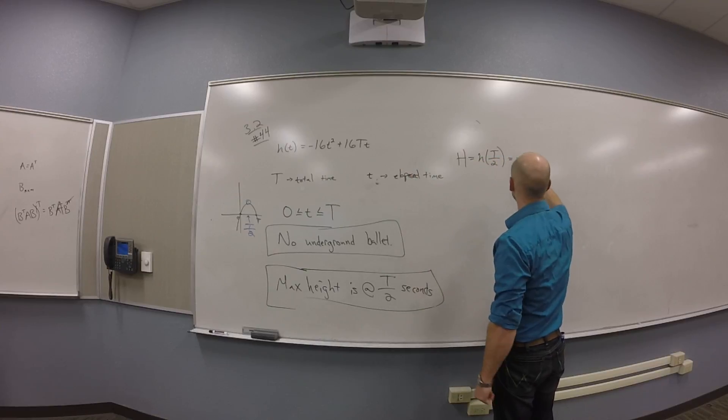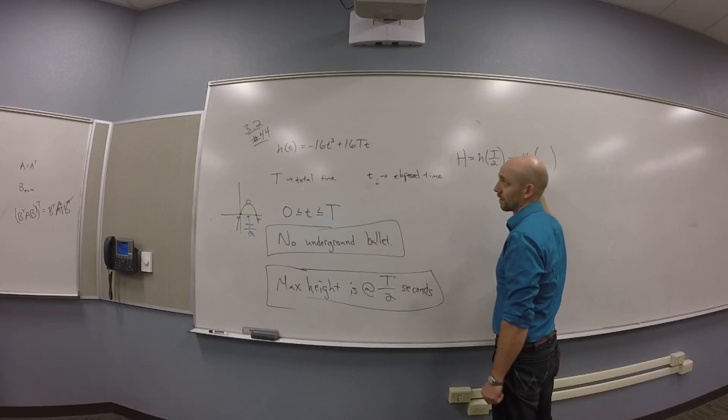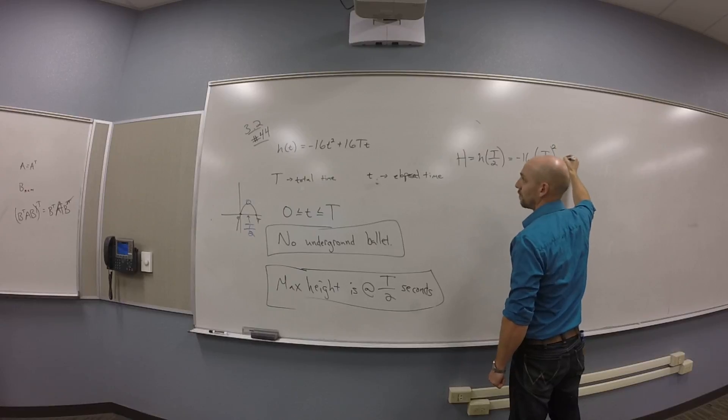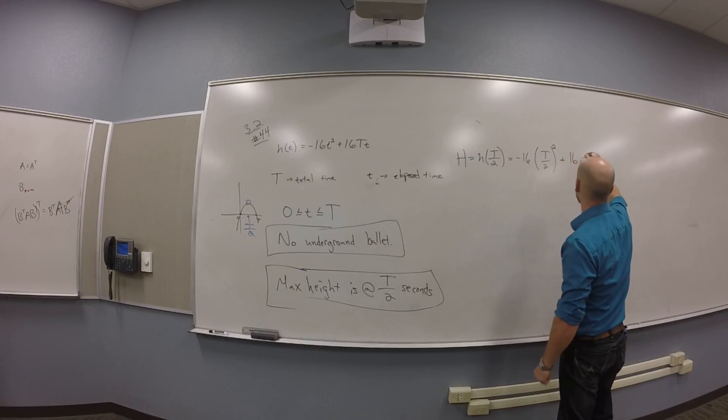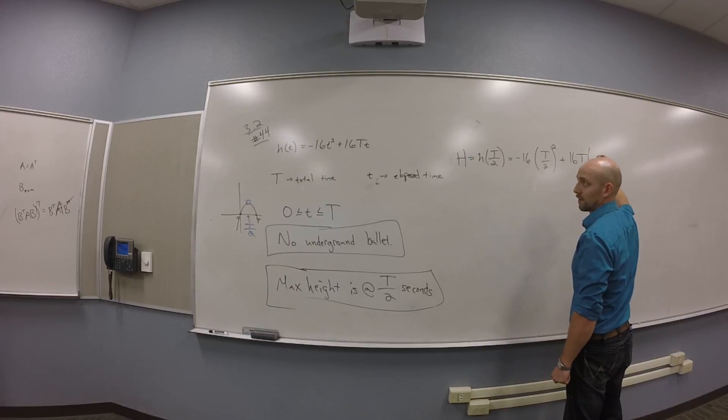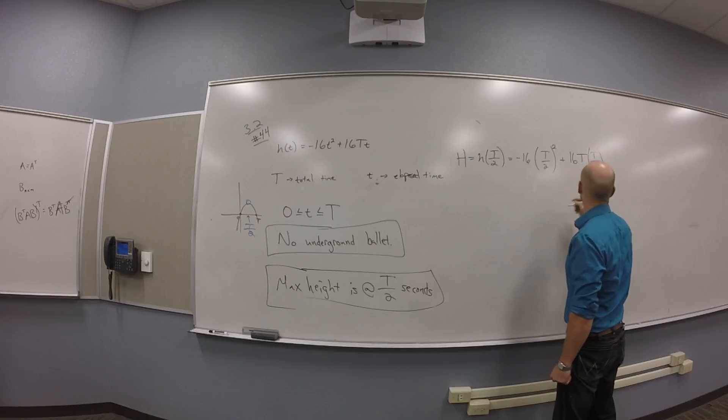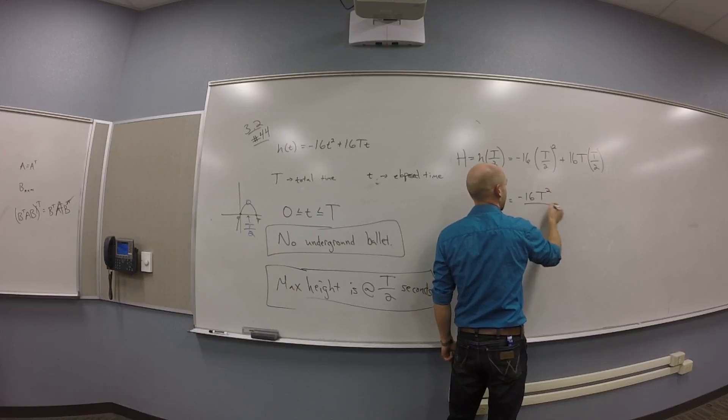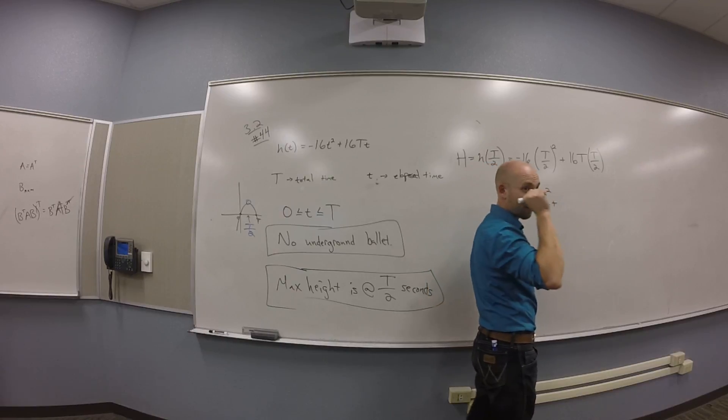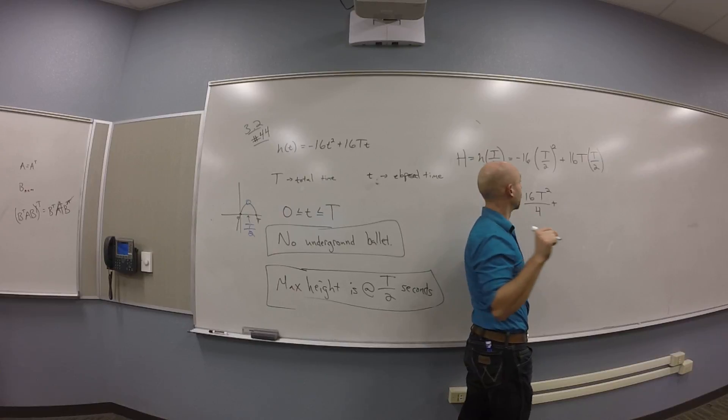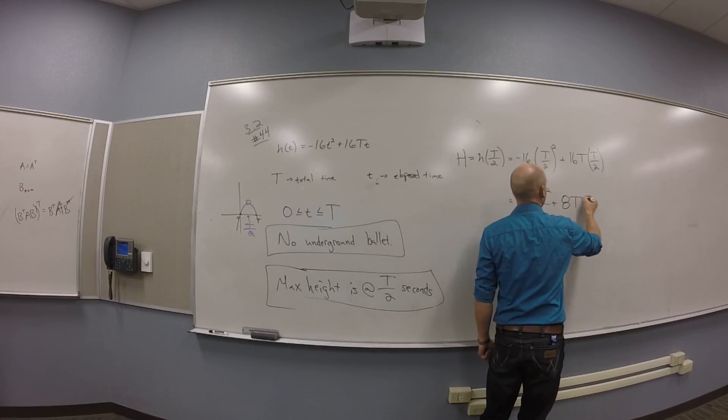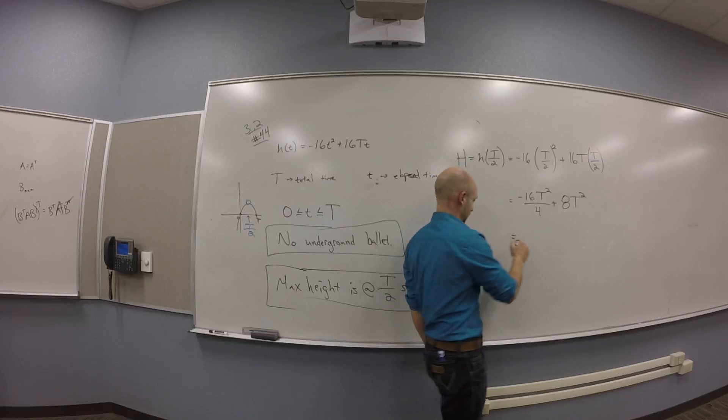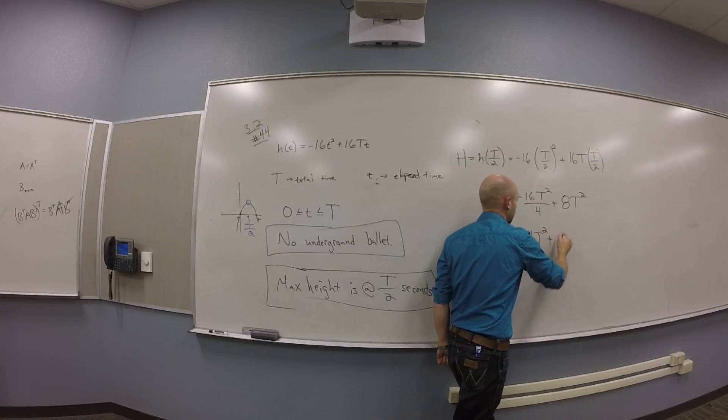This is going to be negative 16 times T over 2 squared plus 16 capital T times capital T over 2. So all told here, I got minus 16 capital T squared over 4 plus... plus what? Plus 8T squared. What's minus 16 over 4? Negative 4. We got negative 4T squared plus 8T squared, which equals 4T squared.